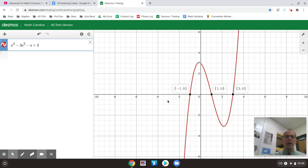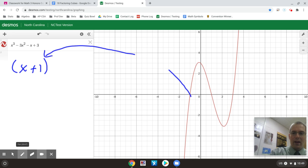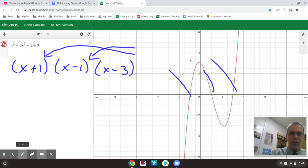And in this case, I can get three solutions: negative one, positive one, and three. So each of those solutions would give me a factor. That means I would expect this to factor as an x plus one using my first intercept of negative one. Then I would expect to have an x minus one using my next intercept of the positive one. And then I would expect to have an x minus three using my last x intercept of positive three.